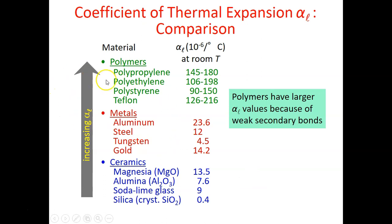This is just a comparison of the coefficient of thermal expansion among ceramics, metals and polymers. Above all, polymers have larger thermal expansion coefficient because of their weak secondary bonds. Because their bonds are weak, they have larger thermal expansion. Meaning when they are applied to any heat increment or heat treatment, they will expand even more compared to metals and ceramics.